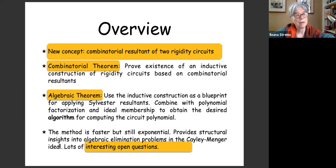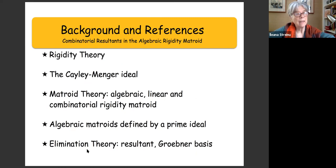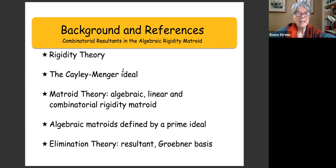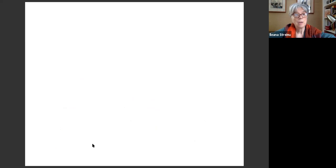There is a lot to cover to explain the terminology. I'll mostly assume the audience knows rigidity theory. You'll hear about the Cayley-Menger ideal, matroid theory — not just combinatorial rigidity, but mostly the algebraic matroid defined by a prime ideal — and its connection with elimination theory, resultants, and Gröbner basis. Let's start with the combinatorial rigidity part and introduce the new concept: the combinatorial resultant of two rigidity circuits.